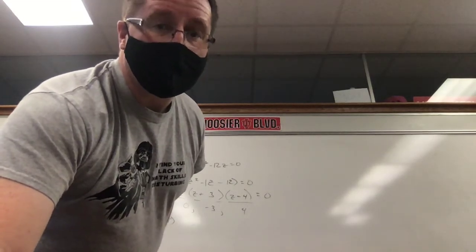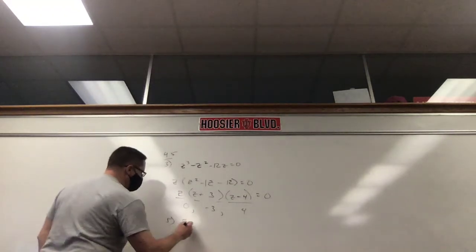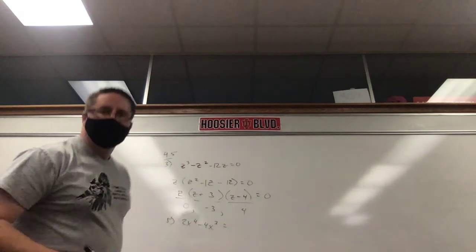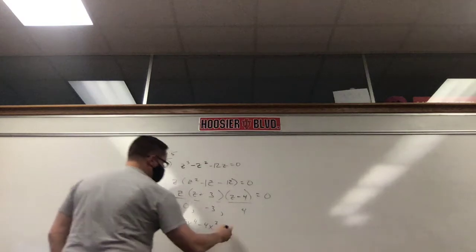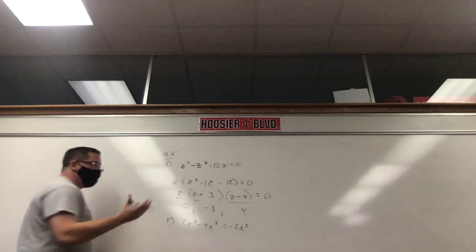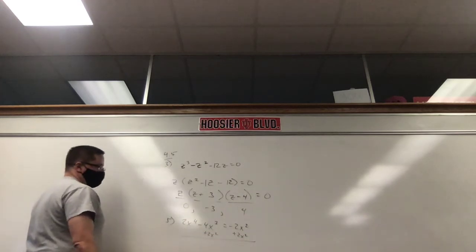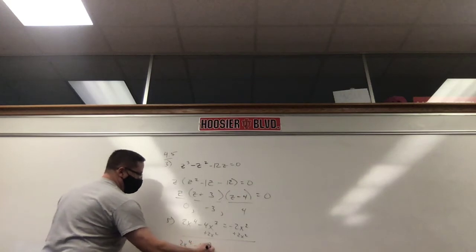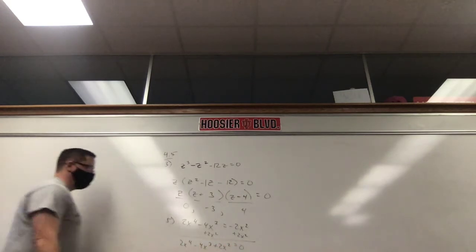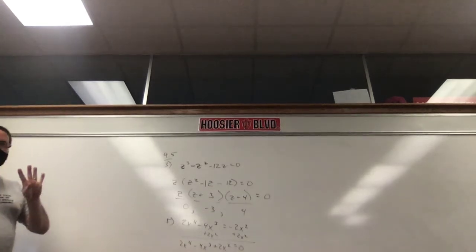Let's look at number 5. We have 2x⁴ minus 4x³ equals negative 2x². First thing we need to do is not factor yet — it has to equal zero. It doesn't matter which side we make zero; I'm going to add 2x² to each side. There are no like terms, so we put them in order: 2x⁴ − 4x³ + 2x² = 0. This one should have at most four answers because it's 4th degree.